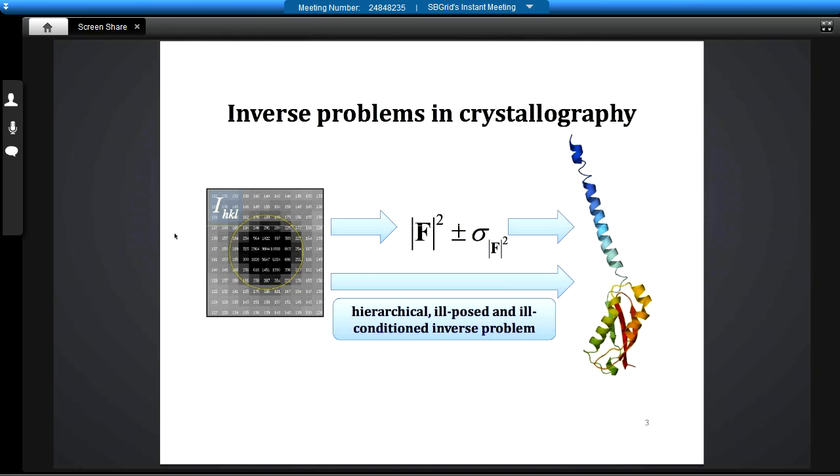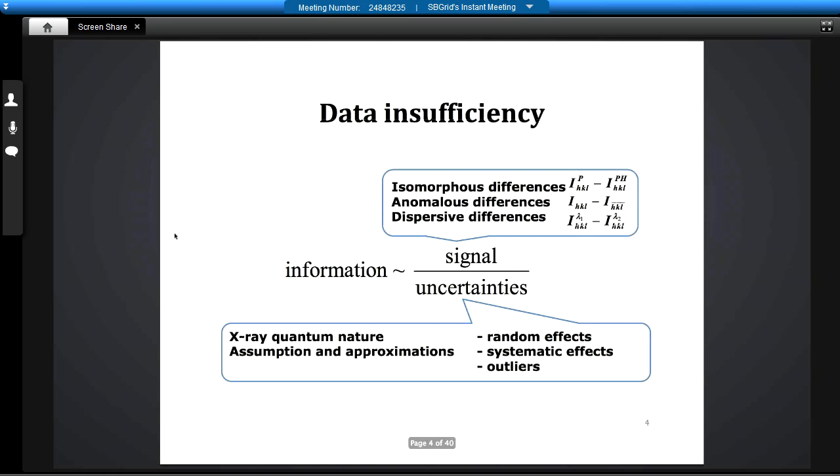It simply means that there is no guarantee of solution. You can have perfect data and still no solution. Moreover, you can fail at various steps because each of the steps is the type of the inverse problem. And on top of it, we have loss of information which I discuss later. How to go around this problem?